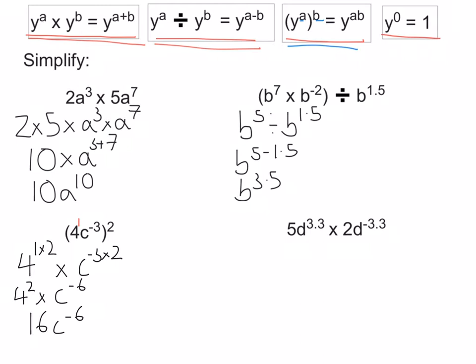Last one here. Again, let's split out the big numbers. So we've got 5 times 2. And then we've got times by d to the 3.3 times d to the negative 3.3.